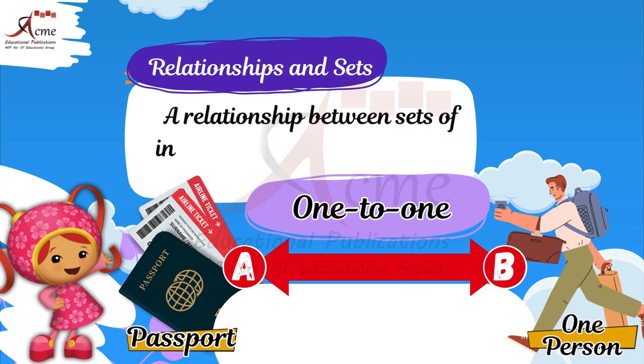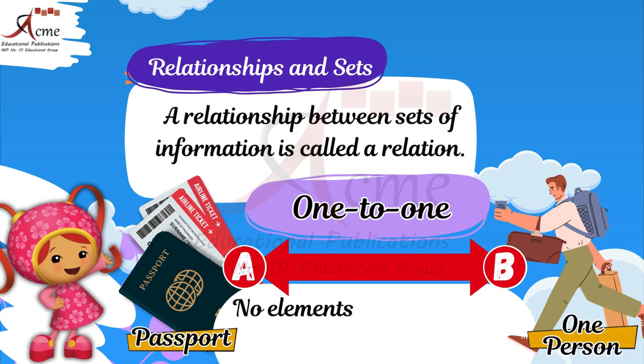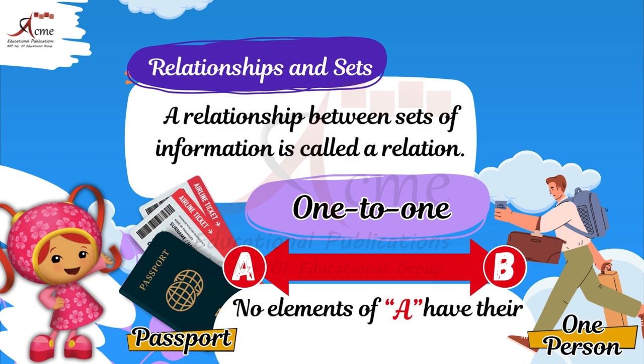First, let's learn about a one-to-one relationship. Look at the picture of a passport and a person. Each person has one passport. This is called a one-to-one relationship.